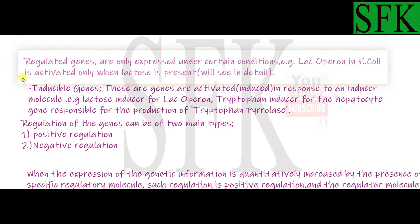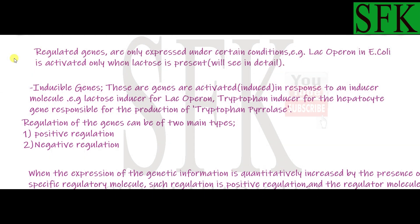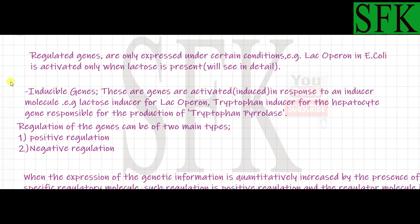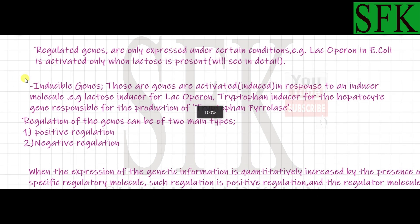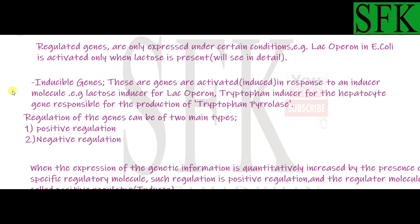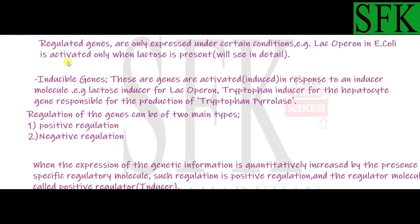The third category is regulated genes. These are genes which are only expressed under certain conditions — for example, a certain molecule must be present for their expression. The lac operon in E. coli is activated only when the lactose molecule is present. Regulated genes are expressed only under certain conditions; if those conditions are not fulfilled, they won't be expressed. Their expression is tightly regulated by the presence or absence of certain substances.